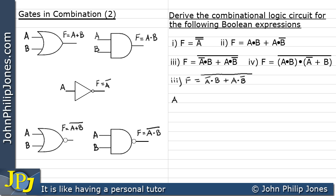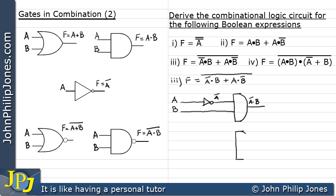Let's start with input A going through a NOT gate, producing NOT A. I have input B coming in alongside it. Both NOT A and B go into an AND gate, and the output of that is NOT A AND B. I'll need another AND gate below, because I also require A AND NOT B as the other part of the expression.